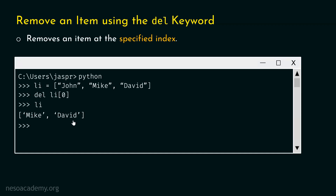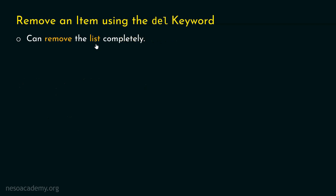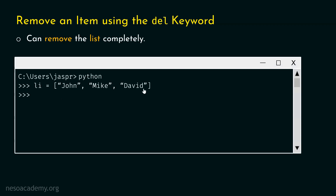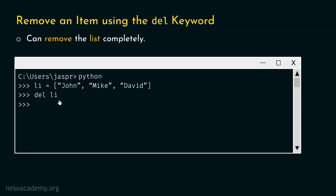We have learned how to remove an item using the del keyword. The del keyword is also useful for removing the complete list. Let's open the command prompt and type del li — just specifying the name of the list. After hitting enter, the list is deleted. Let's type li to verify. We will get a NameError from the interpreter saying 'name li is not defined.' This clearly indicates that li does not exist and the list is completely deleted.